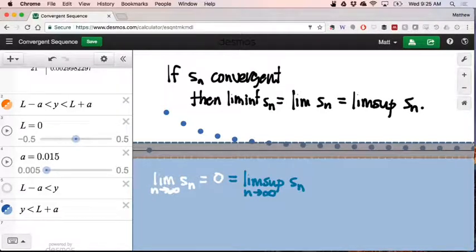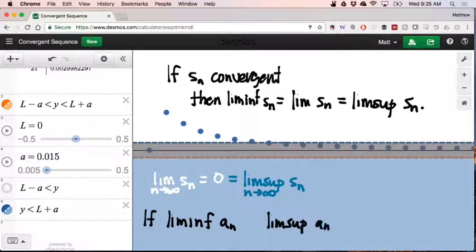In fact, you might be able to prove, well, I suppose it's a contrapositive of this in some ways, and that is that if I have a sequence, let's call it an, and if the limit inferior of an is not equal to the limit superior of an, then what do we conclude about an? It's not convergent.